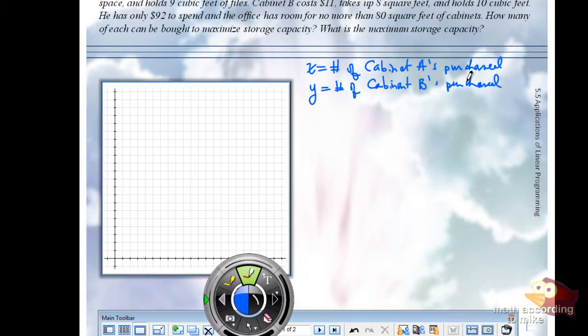Are we trying to maximize or minimize? Maximize. What are we trying to maximize? We'll say maximize Z equals... How much storage do we get from cabinet A? Nine. Nine cubic feet. Plus, how much storage do we get from cabinet B? Ten.